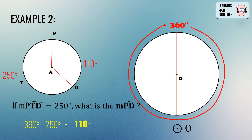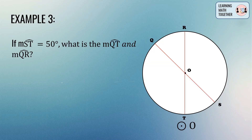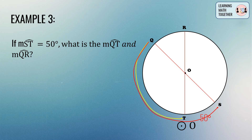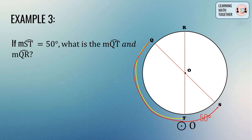Therefore, the measurement of arc PD is equal to 110 degrees. For the last example, we have circle O. If the measurement of arc ST is equal to 50 degrees, what is the measurement of arc QT and arc QR? Let's focus first on arc QT. Notice that arc QT is connected to semicircle QTS, and the measurement of a semicircle equals 180 degrees.